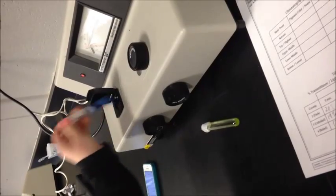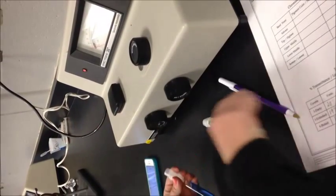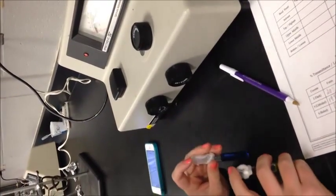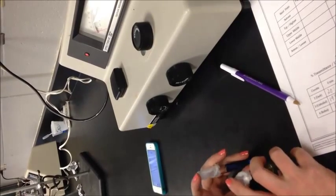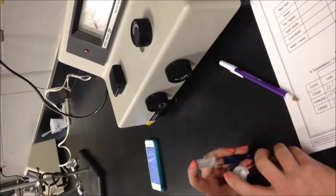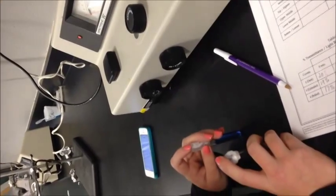For the rest of the cuvettes, we're just going to continue the process of letting them sit under the light for 5 minutes, placing in number 1 to make sure it's zeroed at 100%, and then recording how much transmittance there is in each cuvette.